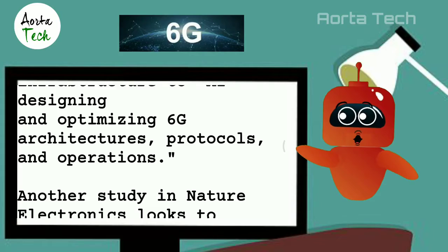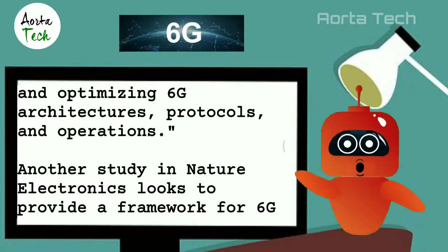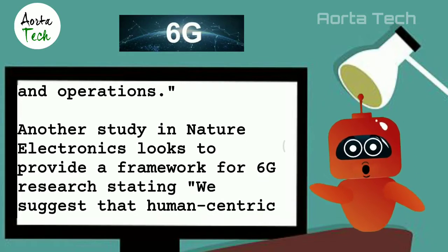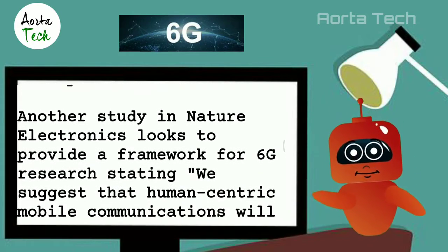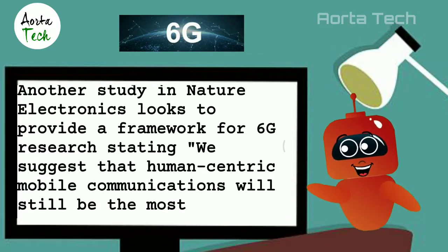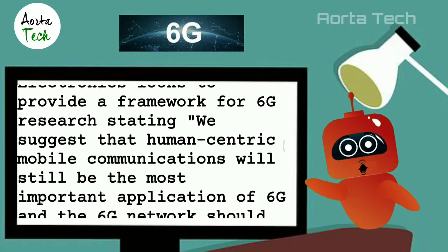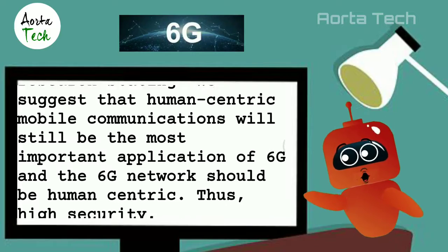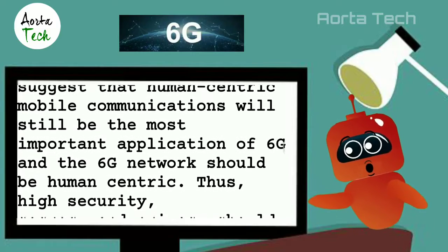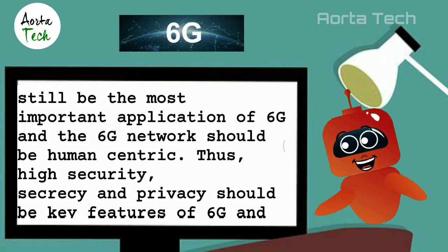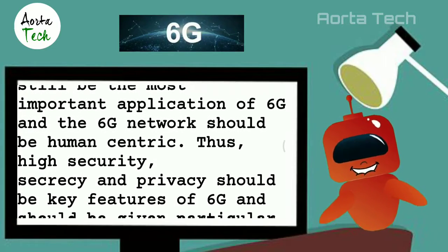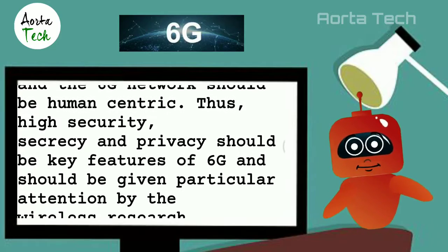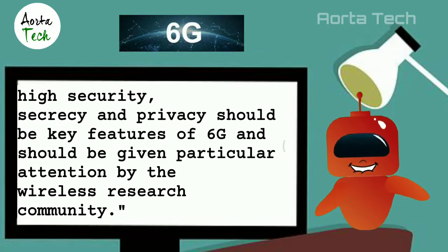A study in Nature Electronics provides a framework for 6G research, stating: "We suggest that human-centric mobile communications will still be the most important application of 6G, and the 6G network should be human-centric. Thus, high security, secrecy, and privacy should be key features of 6G and should be given particular attention by the wireless research community."